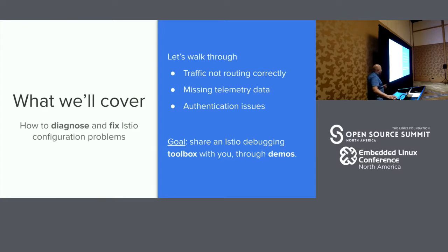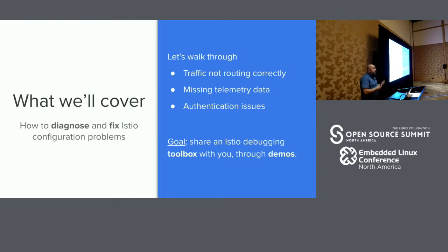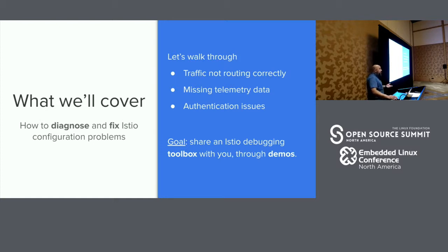What I want to cover today is how to diagnose and fix some Istio configuration problems. The three scenarios I want to talk through are: one, traffic not routing correctly; two, what to do when telemetry data is missing — you're not seeing metrics or monitoring data; and three, what happens if you run into mTLS issues where services can't talk to each other because something's not working with encrypted connectivity. Finally, I'll close with a good list of tools and a toolbox you can use when debugging these deployments.